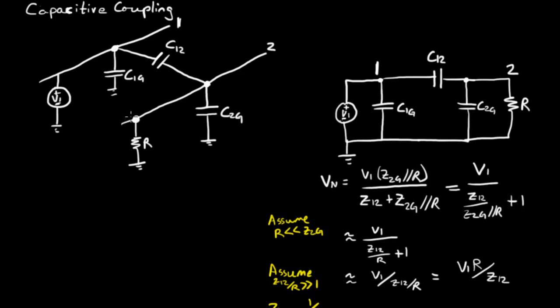In this video I'm going to talk about capacitive coupling between two circuits. Here I've drawn two wires, wire 1 and wire 2, and I'm going to cover the capacitive coupling that can happen between these two wires. This will develop a lot of intuition in general for capacitive coupling in circuits.